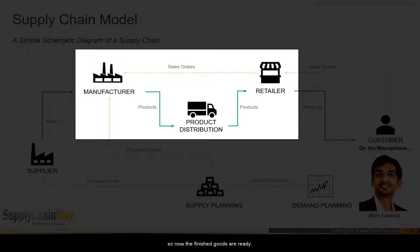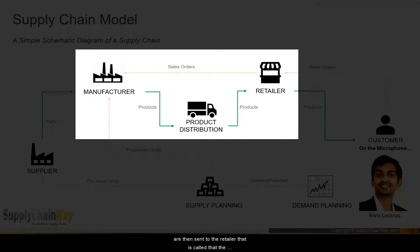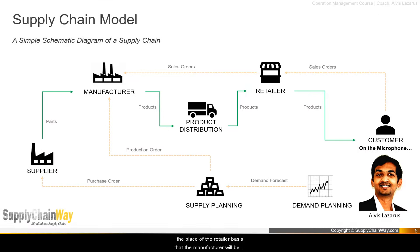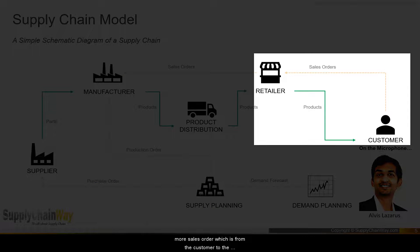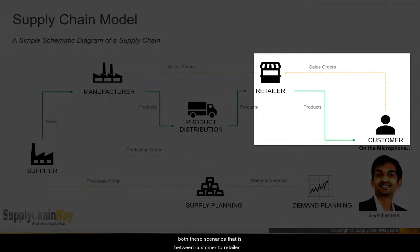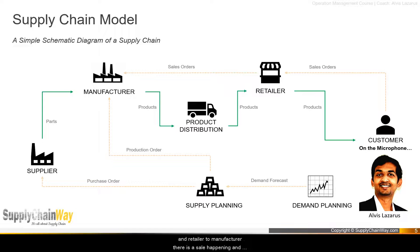Once the finished goods are ready, the retailer sends a sales order to the manufacturer, and based on that sales order, the products are shipped to the retailer — this is called distribution. The sales order tells the manufacturer exactly when the finished product is required at the retailer's location. There is also a sales order from the customer to the retailer, and based on that, the retailer ships the product to the customer.